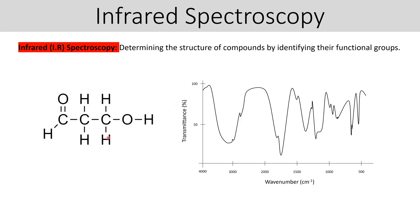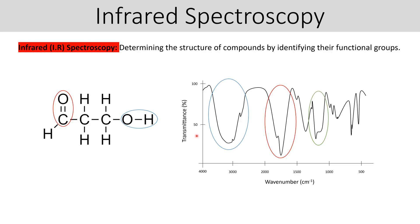Essentially how this works is it looks at the different covalent bonds in the compound and you get peaks for each one of those covalent bonds. It's your job to be able to recognise which peaks correspond to which bonds. If you know which bonds it contains, then you know which functional groups it contains. And by combining that with other data, you might be able to determine the structure of that compound.